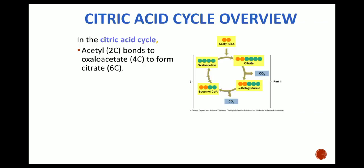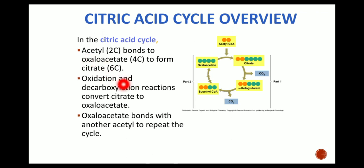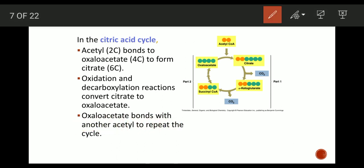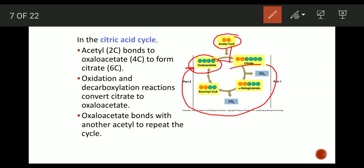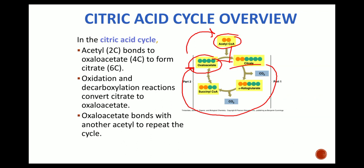In the citric acid cycle overview: acetyl, a two-carbon compound, bonds with oxaloacetate, a four-carbon compound, to form the six-carbon compound citrate. Oxidation and decarboxylation reactions then convert citrate back to oxaloacetate, and oxaloacetate bonds with another acetyl to repeat the cycle. So acetyl CoA and oxaloacetate combine to form citrate, which through a series of reactions is converted back to oxaloacetate, repeating the cycle.